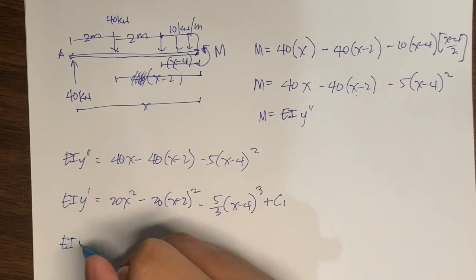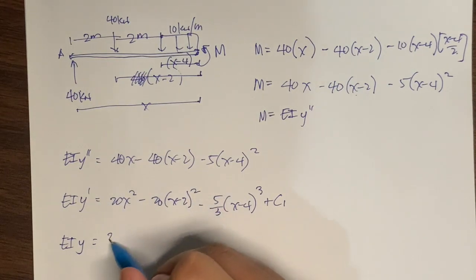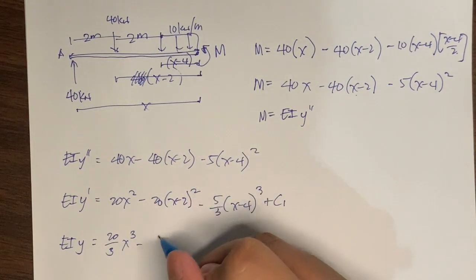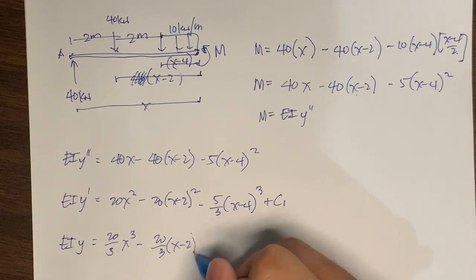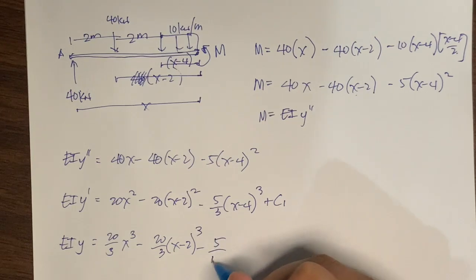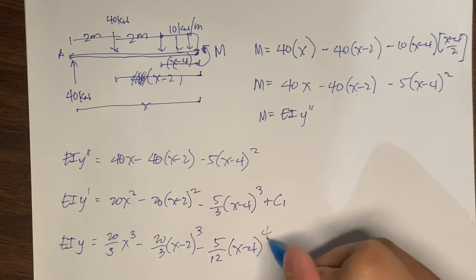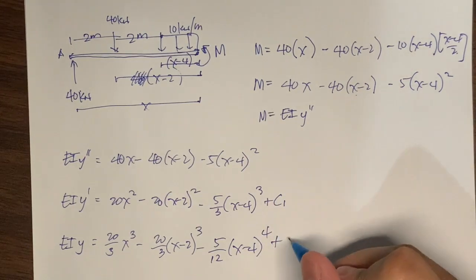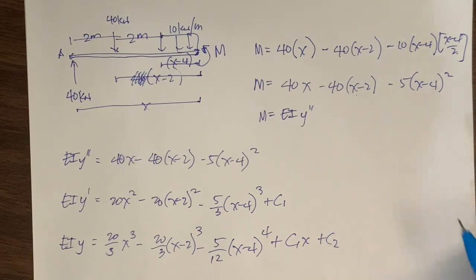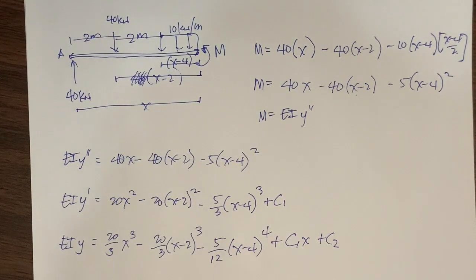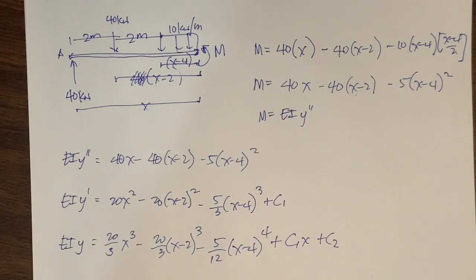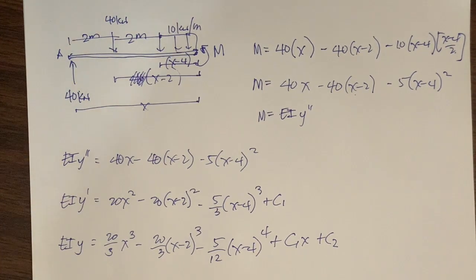Integrating again, EI y equals (20/3)x cubed minus (20/3)(x minus 2) cubed minus (5/12)(x minus 4) to the fourth power plus C1·x plus C2. Since we performed a double integration, we have two arbitrary constants C1 and C2. These are called arbitrary constants because they represent specific values determined by the boundary conditions.